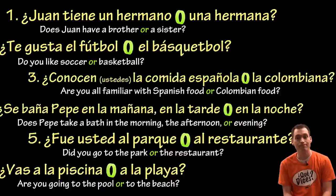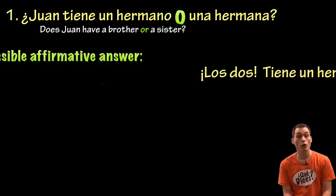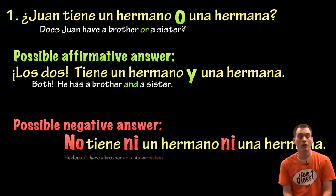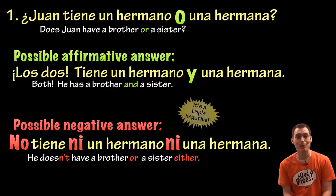¿Juan tiene un hermano o una hermana? Los dos. Tiene un hermano y una hermana. No tiene ni un hermano ni una hermana. Notice here we have a triple negative — literally, he doesn't have neither a brother nor a sister.